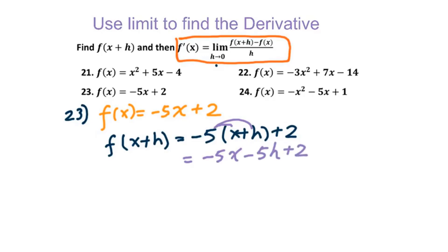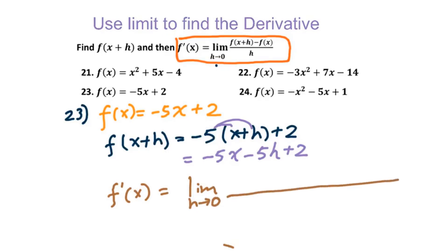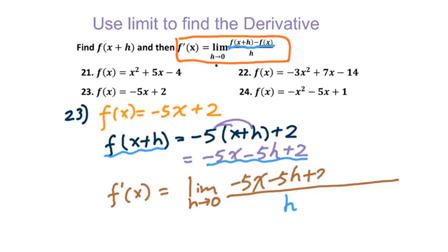Now we will plug into the derivative formula. We have the limit as h approaches 0 of f(x + h) minus f(x), all over h. f(x + h) is -5x - 5h + 2. Then minus f(x), which requires minus parentheses around -5x + 2. Using the distributive property, we get positive 5x minus 2.